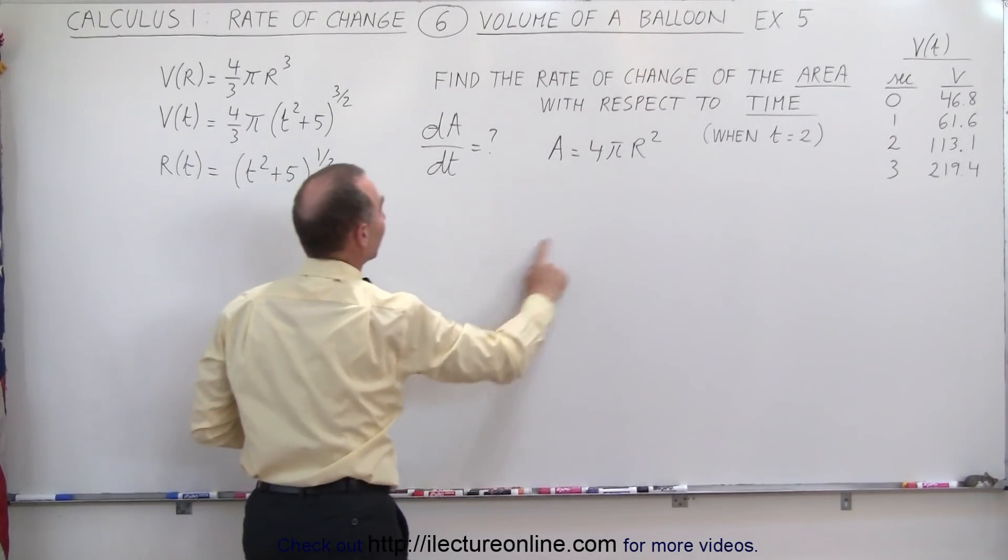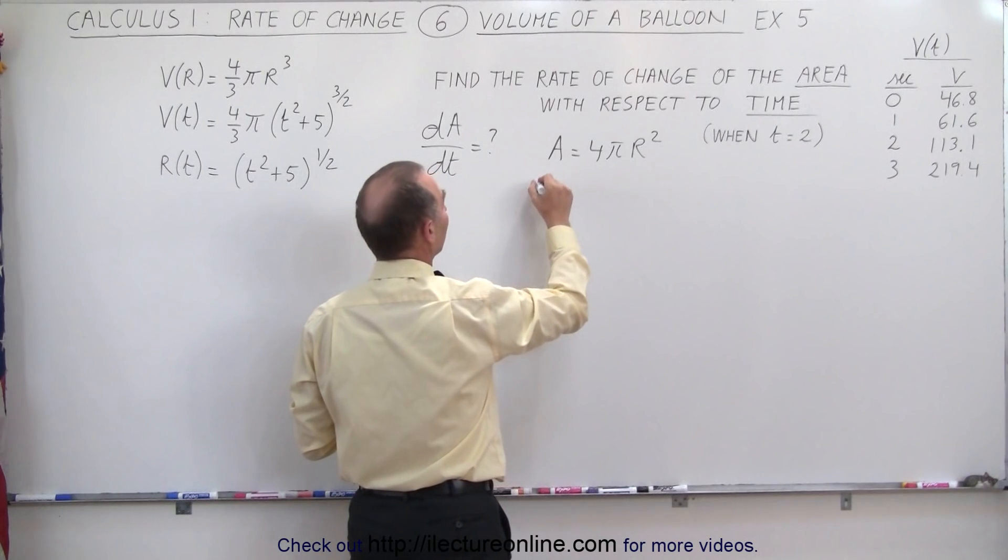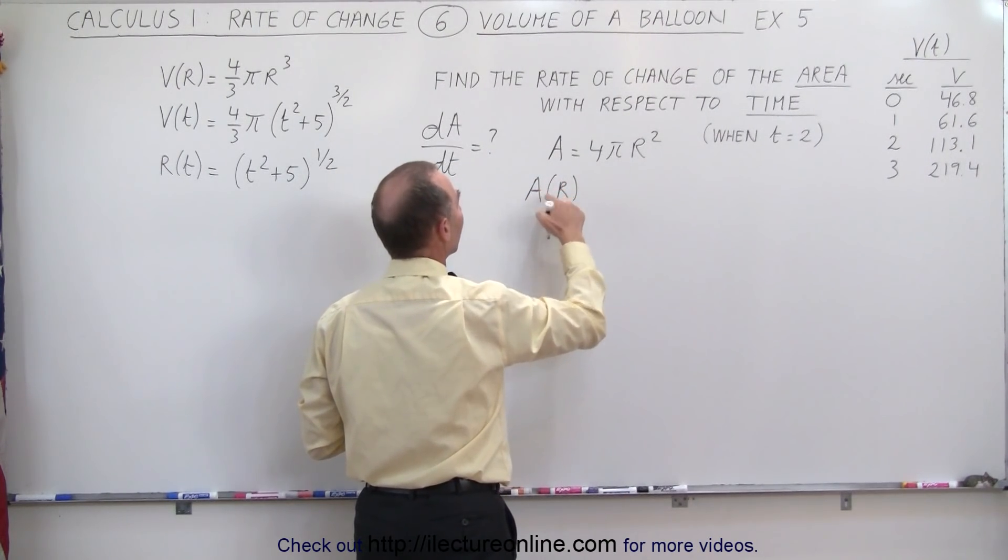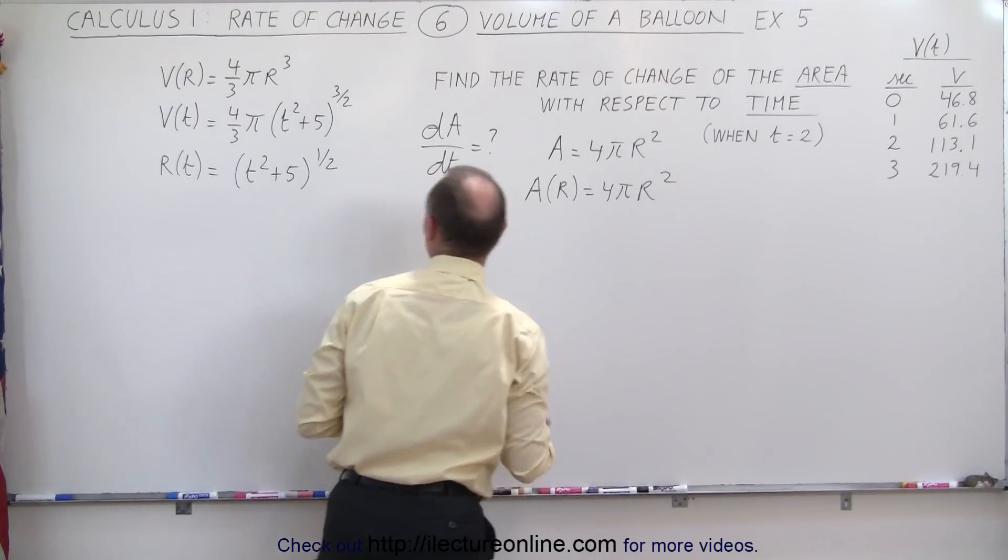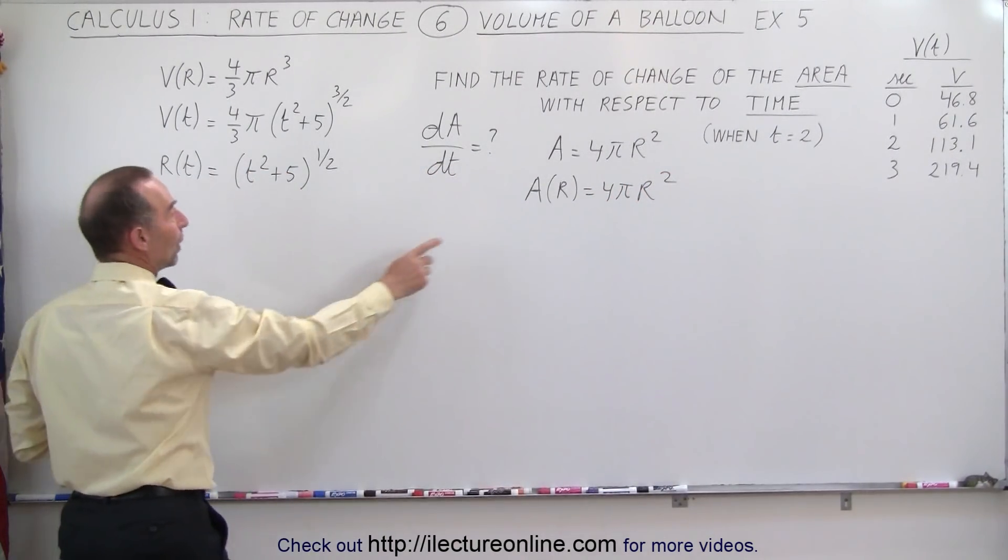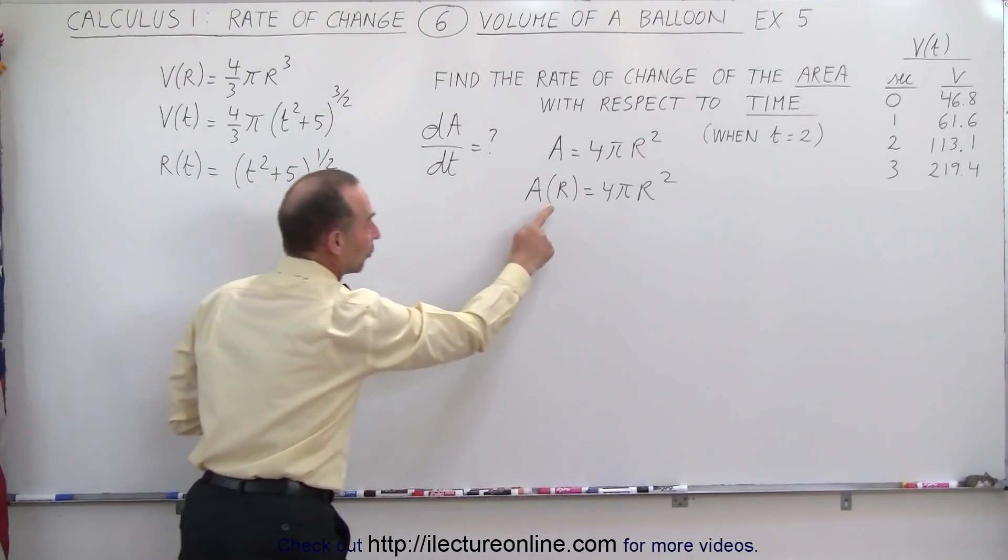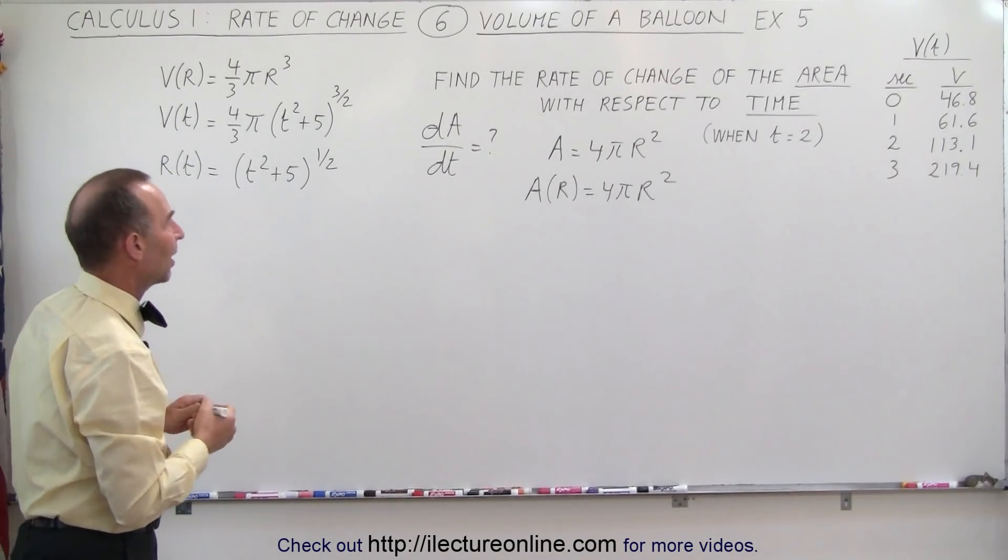We can then substitute this into here to turn the equation, because really what this means is that this is area as a function of the radius, which is equal to 4πr². We then have to replace the radius here by the function, the radius as a function of time, to turn this into an equation of the area as a function of time.